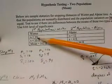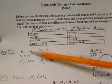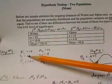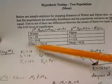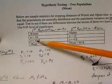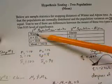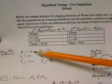N1 is equal to 10, the winter tires. We have 10 of the 10 tires. S1, or the sample standard deviation of those 10 tires, is 10 for the winter. And x bar 1 is 102.